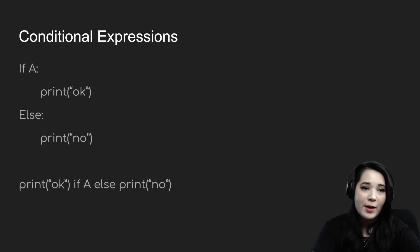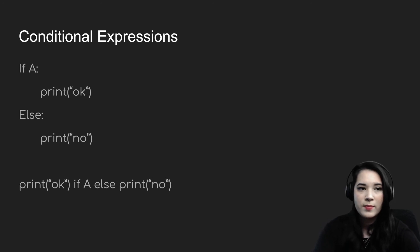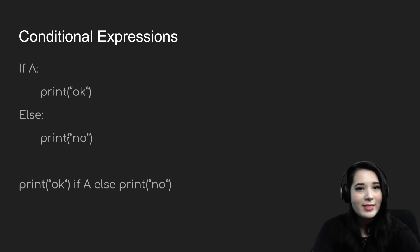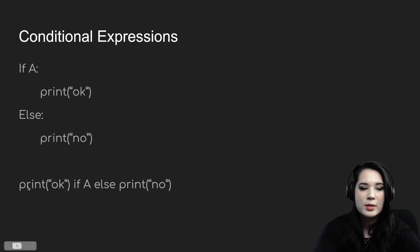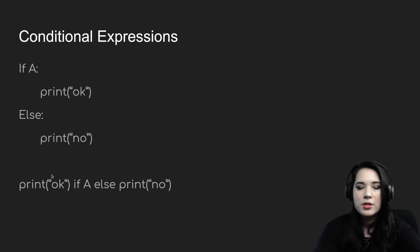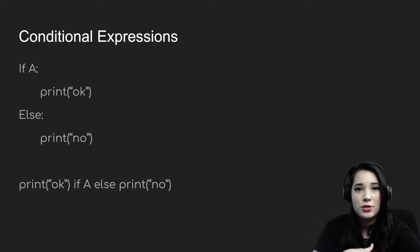Last but not least, let's talk about conditional expressions. Conditional expressions are a shorthand way to write simple if-else statements. For instance, say we had a variable a that was either true or false. We could say: if a, print 'okay', else print 'no.' A conditional expression is a different way to write that exact same code in one line: print 'okay' if a else print 'no.' It's just a little bit pithier. Let's look at how we can convert simple if-else statements into conditional expressions.